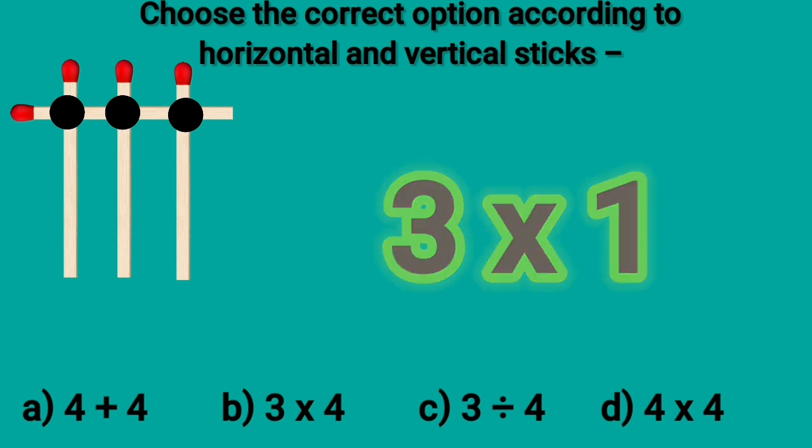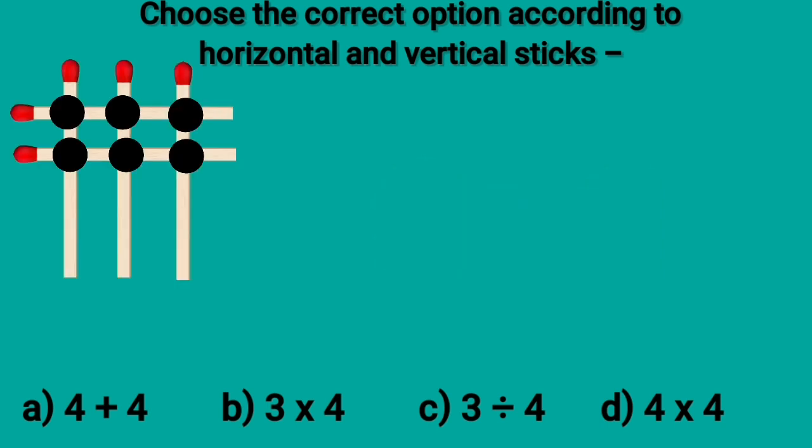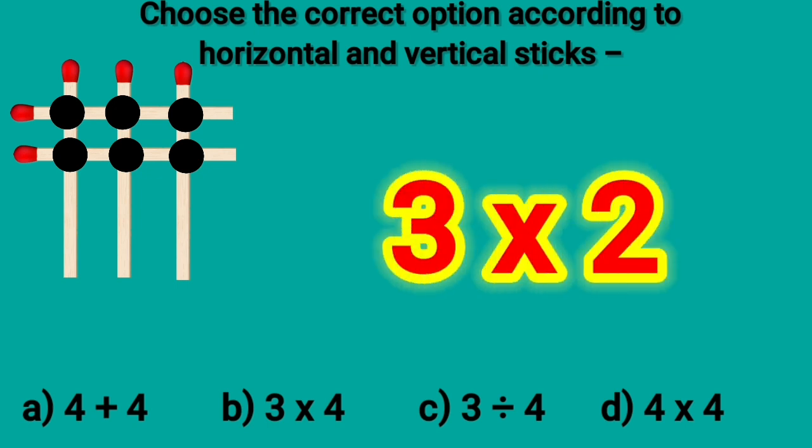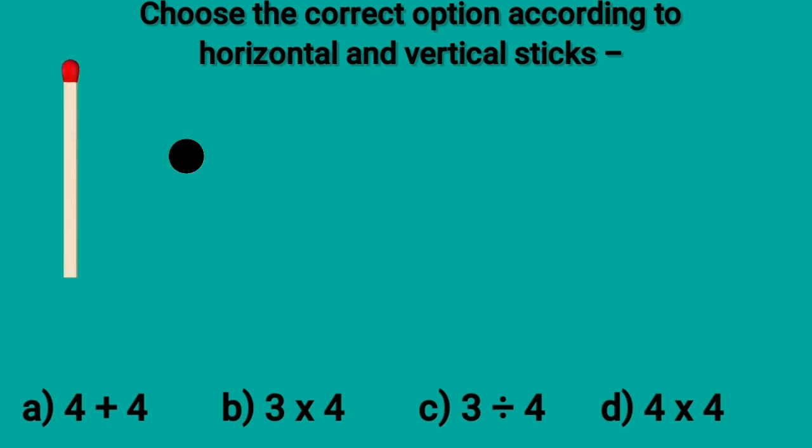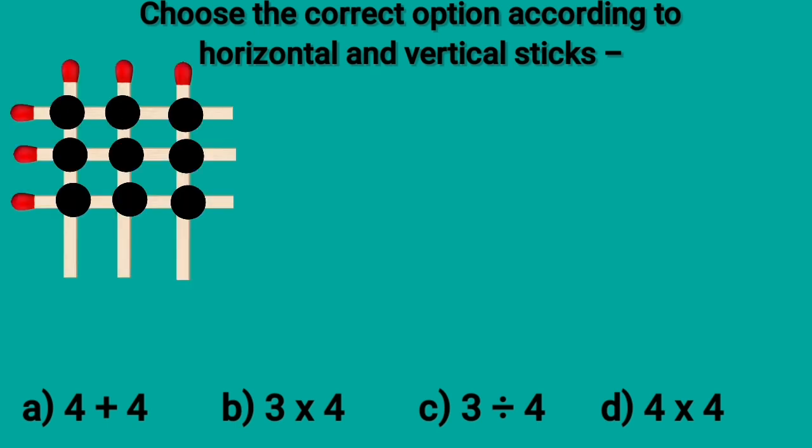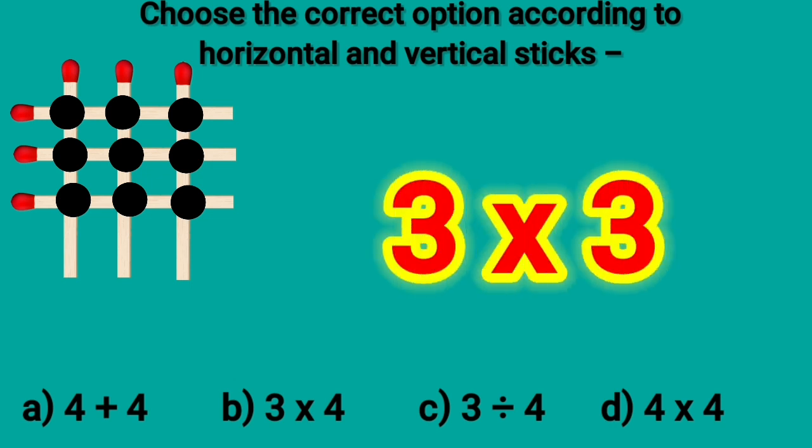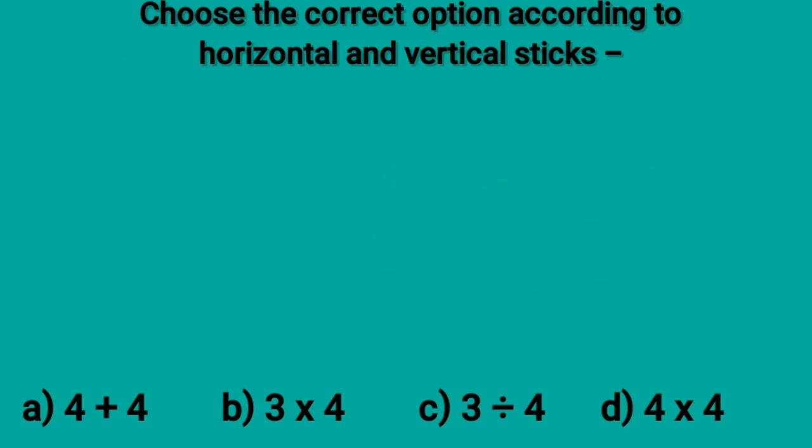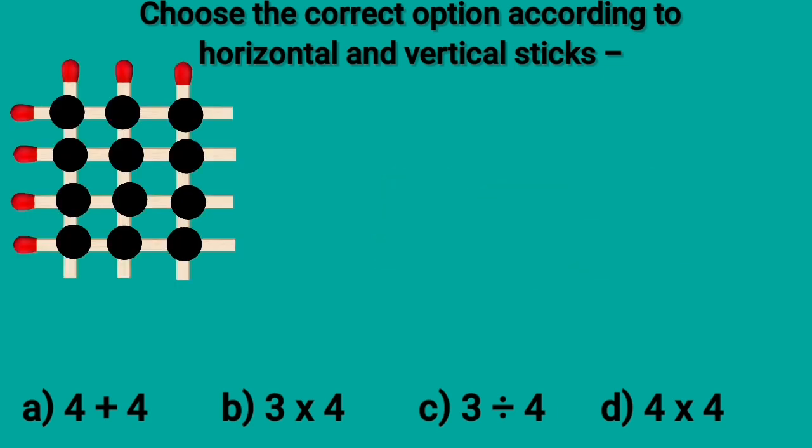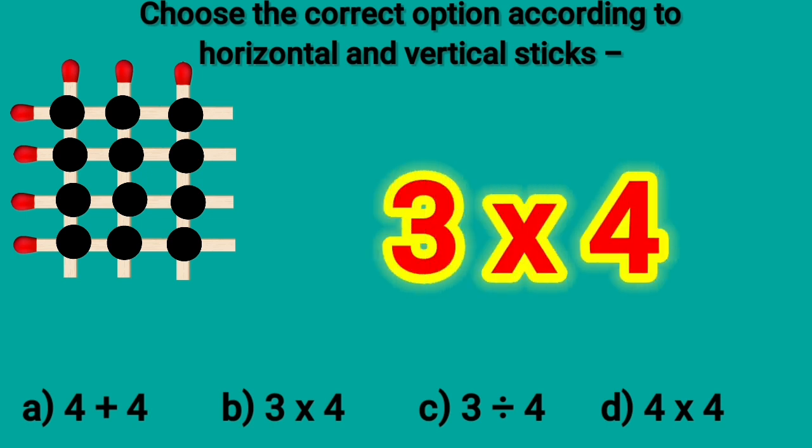When 3 vertical sticks are cut by 2 horizontal sticks, it means 3 multiplied by 2. And when 3 vertical sticks are cut by 3 horizontal sticks, it is written as 3 multiplied by 3. So, likewise, 3 vertical sticks are cut by 4 horizontal sticks. It is written as 3 multiplied by 4.